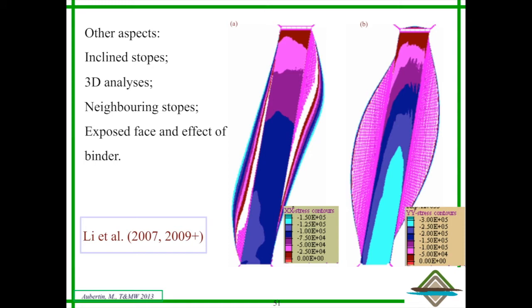Other issues being looked at include the effect of inclination where you have stresses that would be different on the hanging wall and footwall, 3D analyses for galleries when barricades are in galleries, the effect of neighboring stopes that you operate, and also exposed faces where you excavate the rock and expose the backfill. It needs to be stable. Many of these things have been published over the years.